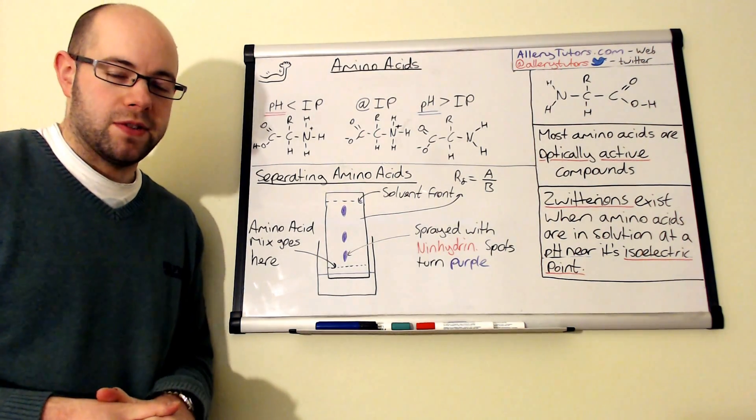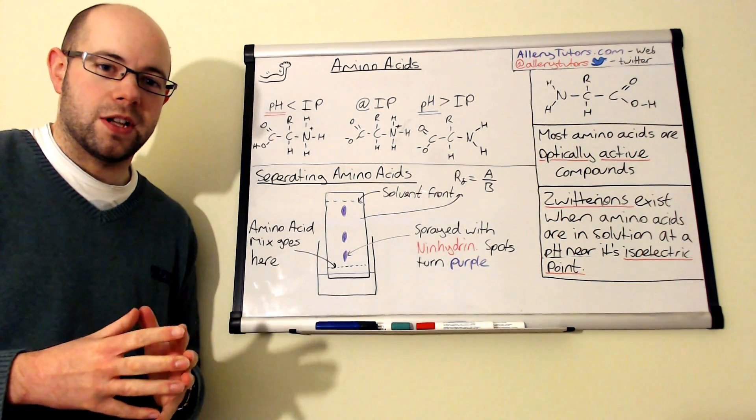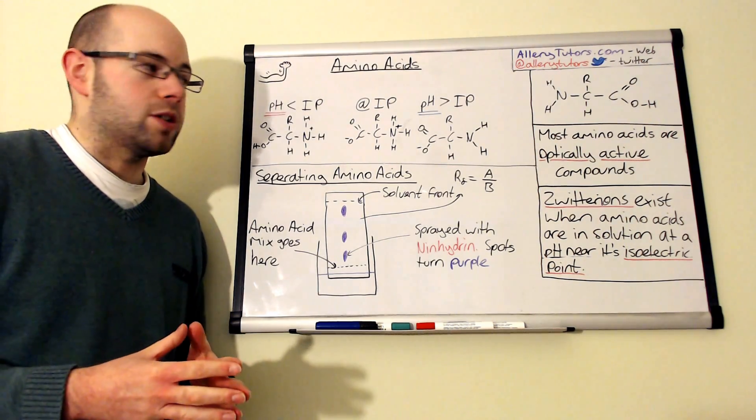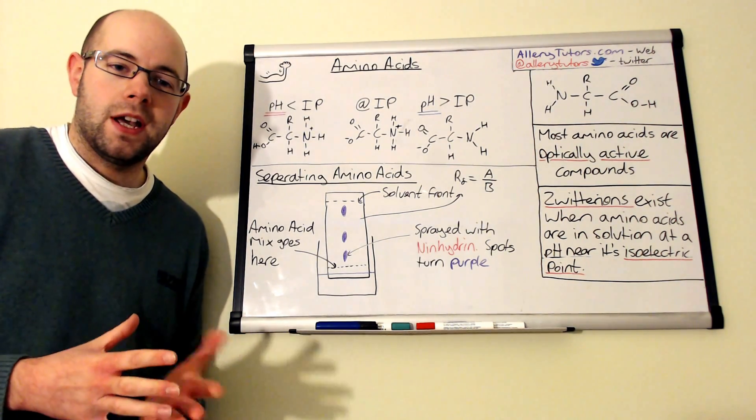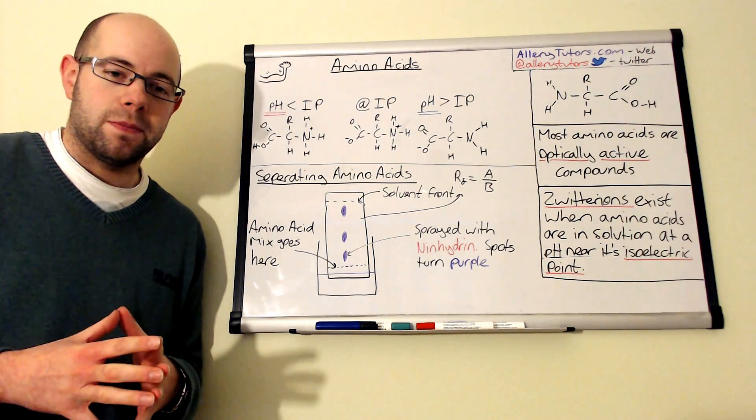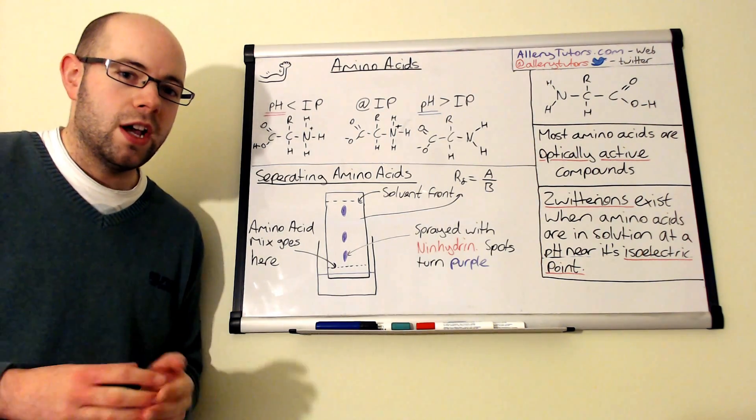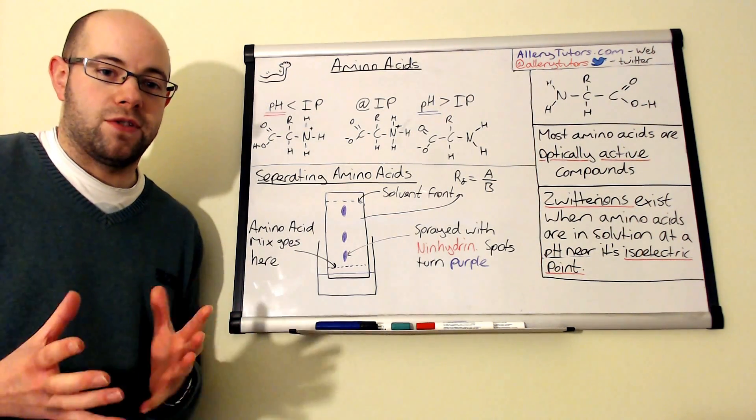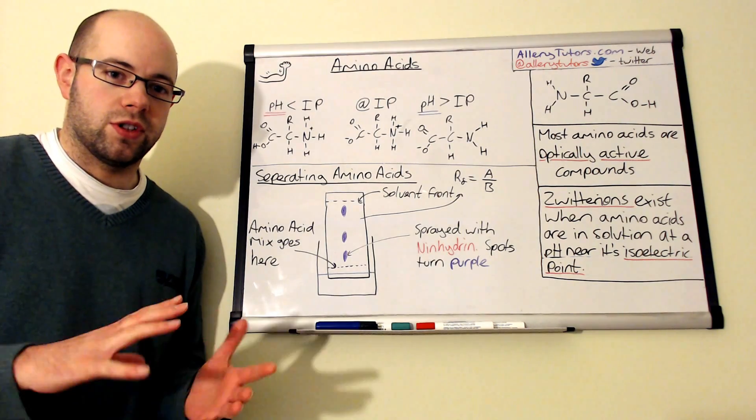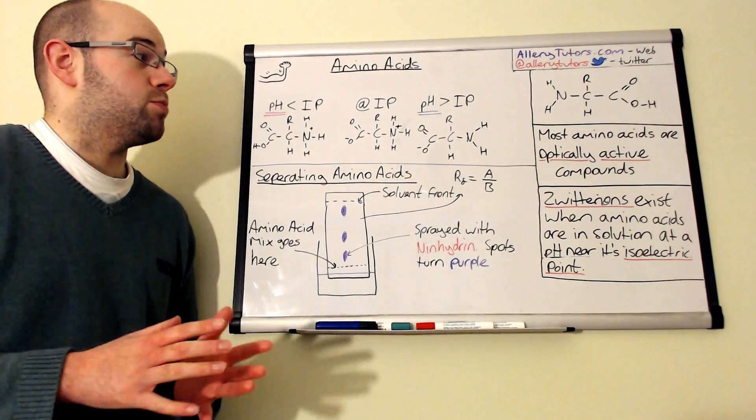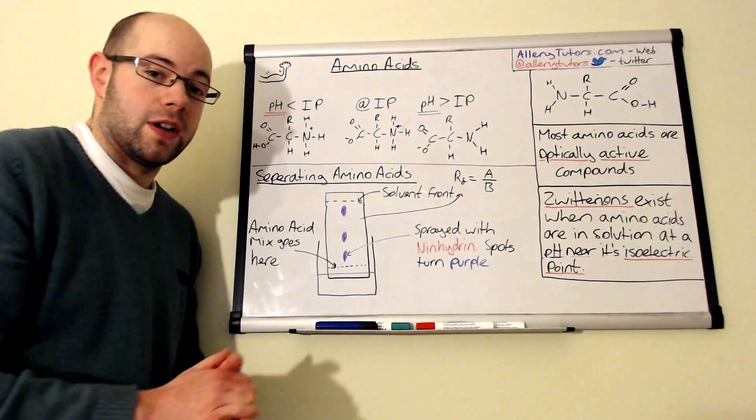Now amino acids can behave in different ways depending on the conditions that you put them in. And we have something called an isoelectric point in amino acids. And this is the point at which an amino acid in solution, the average of the amino acids are actually neutral, so they don't have a charge. And we come on to the next term, which is effectively a zwitterion.